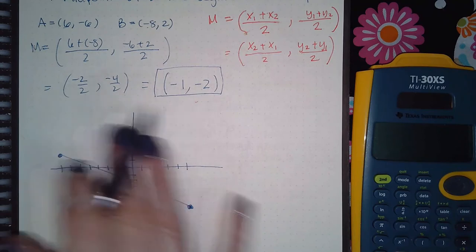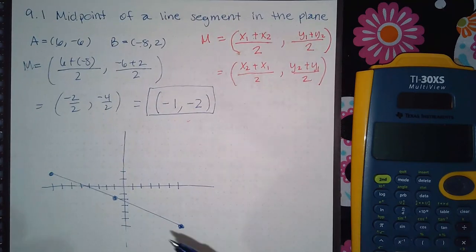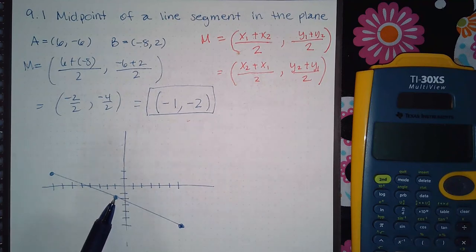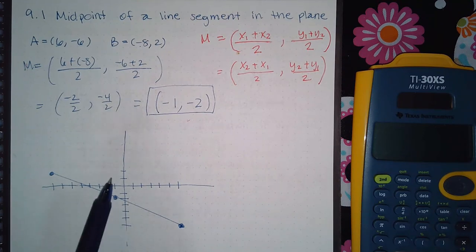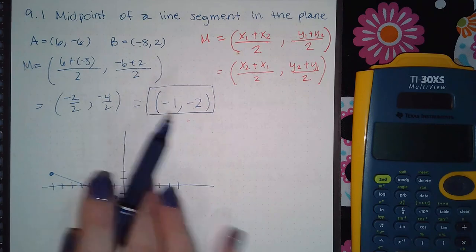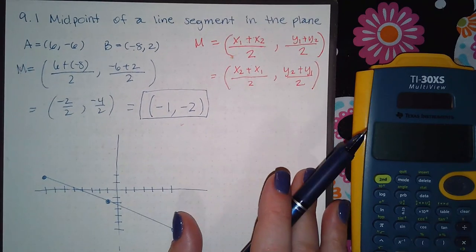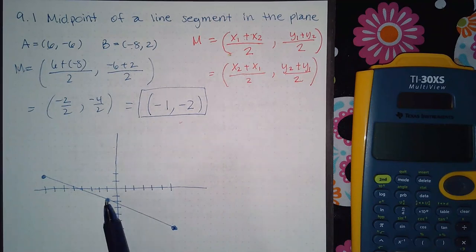But when you do it, you don't really graph and then just try to find the answer like I just did. I don't suggest that you do this and then point there and say, 'Oh, that looks like negative 1, negative 2, that's the answer.' The reason why I don't suggest you do that is because what if the problem involves a fraction?